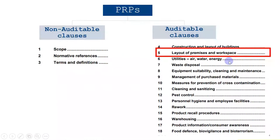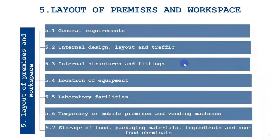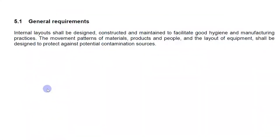There is a specific standard for PRPs known as an ISO technical specification. It is divided into two parts: auditable and non-auditable clauses. In this video I will describe the fifth clause, which is Layout of Premises and Workspace.